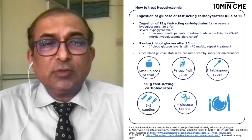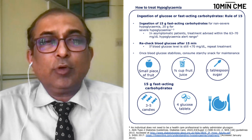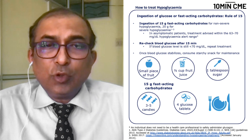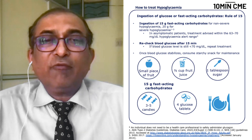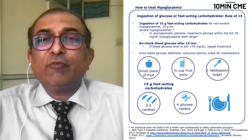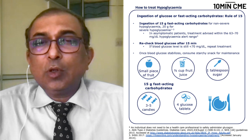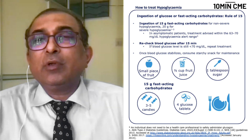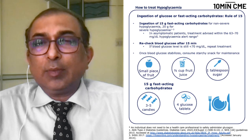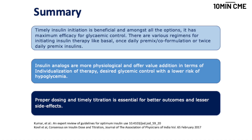Sources of 15 grams of fast-acting carbohydrate include a few small pieces of fruit, half a cup of fruit juice, one tablespoon of sugar, three to five candies, or four glucose tablets. While advising about insulin, we should also advise patients to continue their lifestyle modifications.